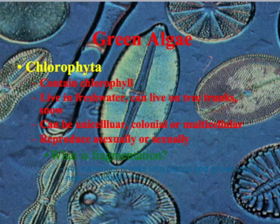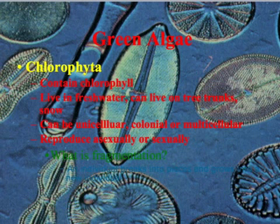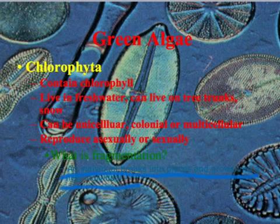The last multicellular type is green algae — typically what you see in ponds. It contains chlorophyll and can live in freshwater, on tree trunks, or even in the snow. Green algae can be unicellular, colonial, or multicellular, and can reproduce asexually or sexually — including by fragmentation, where an organism splits into pieces and each piece can grow into a whole new individual. To review: the three unicellular phyla are euglenophytes, diatoms, and dinoflagellates, while the three multicellular phyla are green algae, brown algae, and red algae.